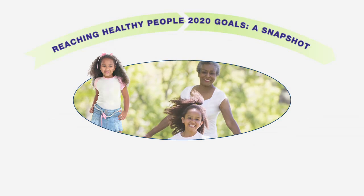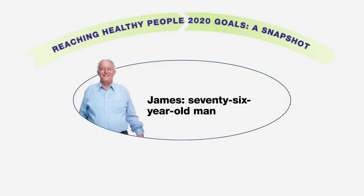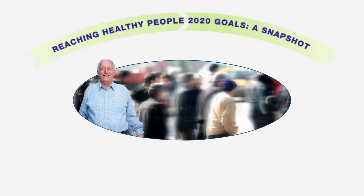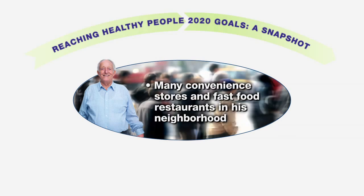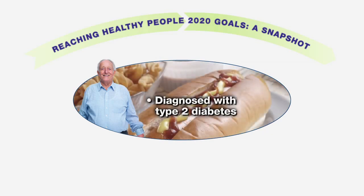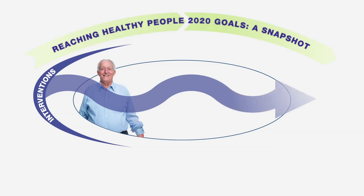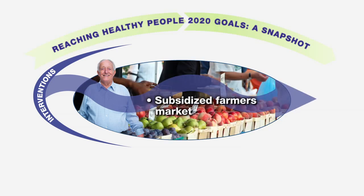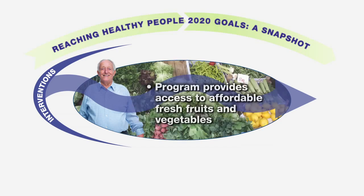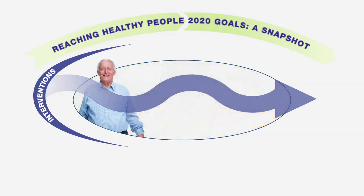Let's look at another example. Meet James, a 76-year-old Caucasian man. James lives in a low-income neighborhood surrounded by convenience stores and fast-food restaurants. He has to take the bus to get to the closest grocery store. Diabetes runs in his family, and James was recently diagnosed with type 2 diabetes. What type of intervention may benefit James? How about a subsidized farmer's market within walking distance to James' apartment? The city health department and a statewide farmer's organization create a local farmer's market program in James' community, targeting high-density, low-income neighborhoods like his.